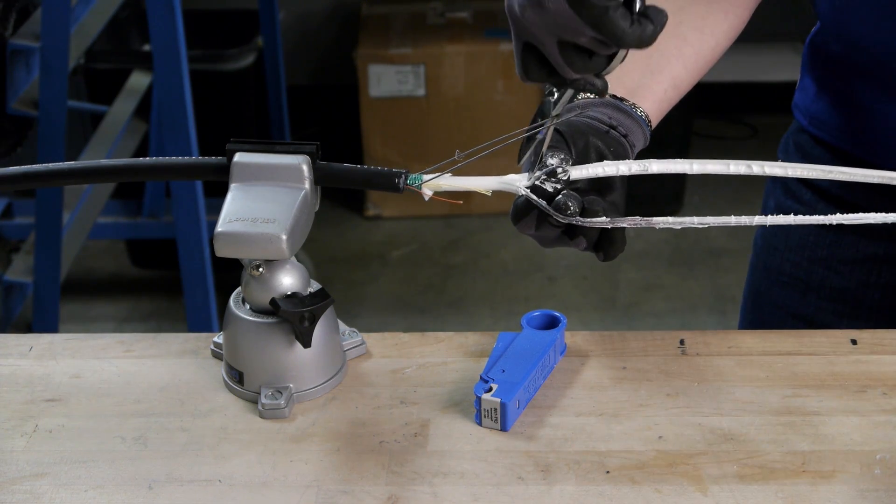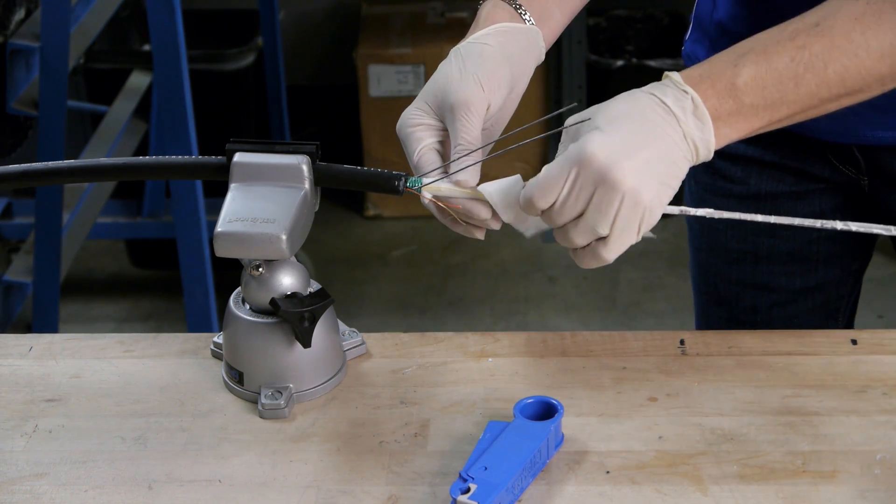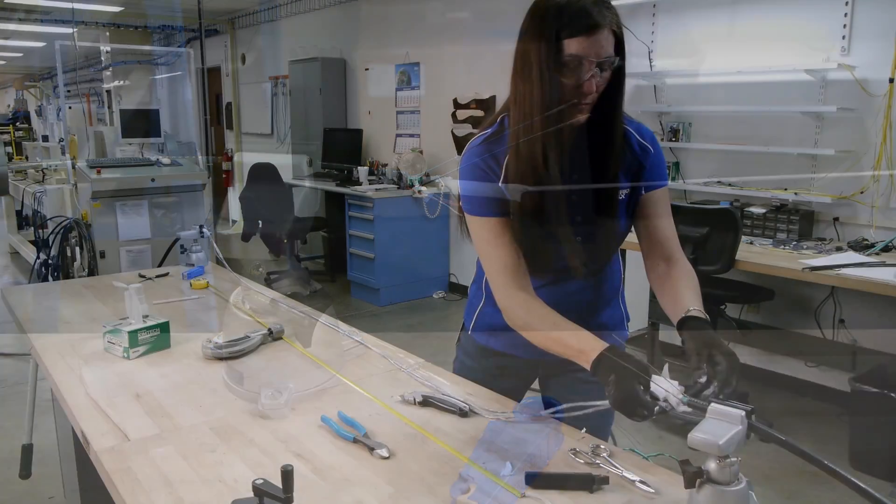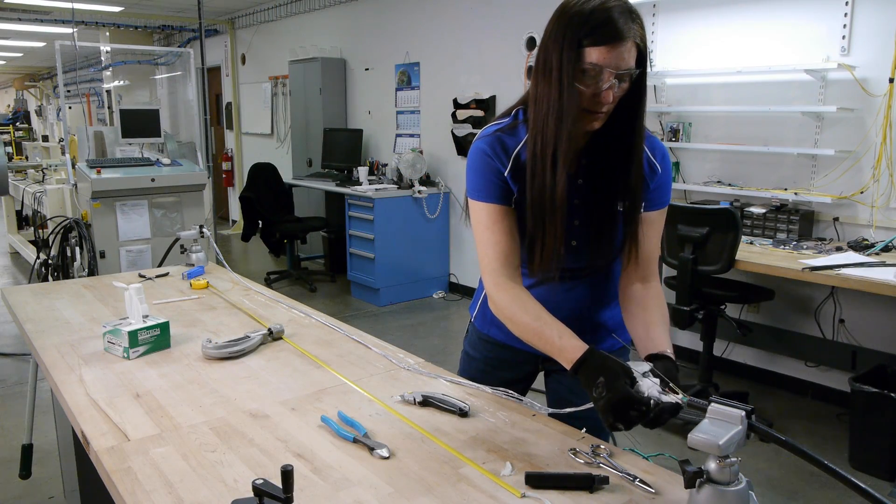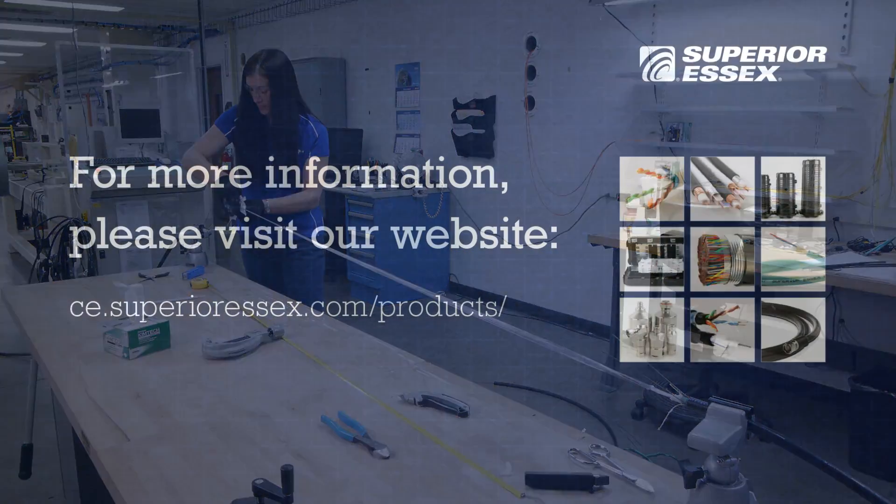It may require an extra trim to remove all material. If the tube is gel filled, remove the bulk of the gel with a clean dry lint-free wipe. Follow up with a wipe soaked in 99% isopropyl alcohol. Cable is ready for installation and closure for splicing.